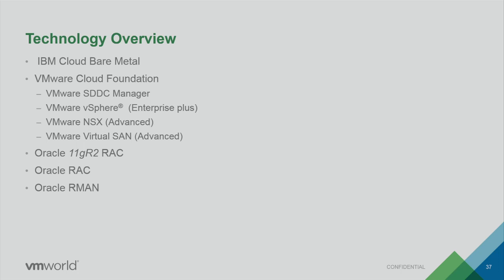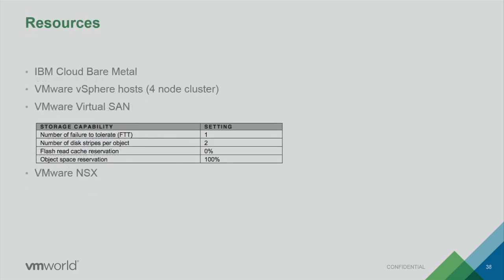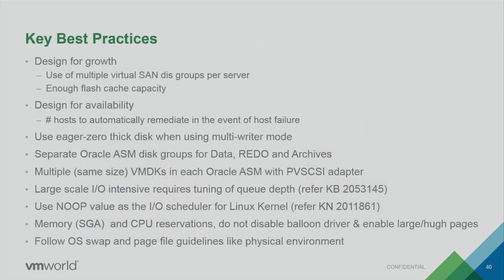For backing up Oracle, we use RMAN. We RMAN the database to a flat file and then use our normal virtual backup software to back up that flat file — we don't have to worry about backing up the database manually. Key best practice: design for growth using multiple virtual disk groups for vSAN. When designing vSAN for Oracle, split your vSAN into two or more different disk groups — if you lose a disk in a group, you don't degrade the service of your entire vSAN while it rebuilds.